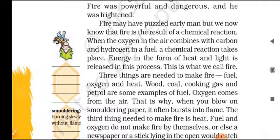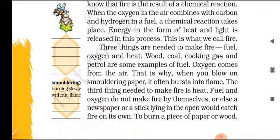Three things are needed to make fire: fuel, oxygen, and heat. Wood, coal, cooking gas, and petrol are some examples of fuel. Oxygen comes from the air — that is why when you blow on smoldering paper it often bursts into flame. The third thing needed to make fire is heat.